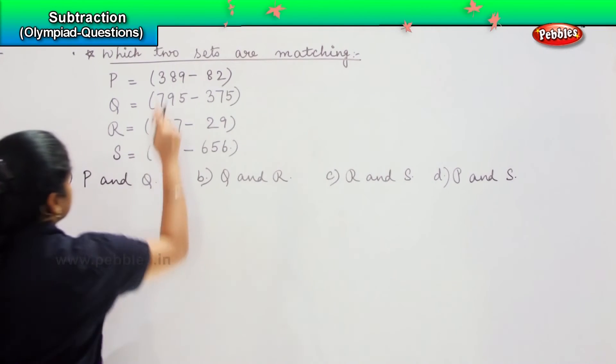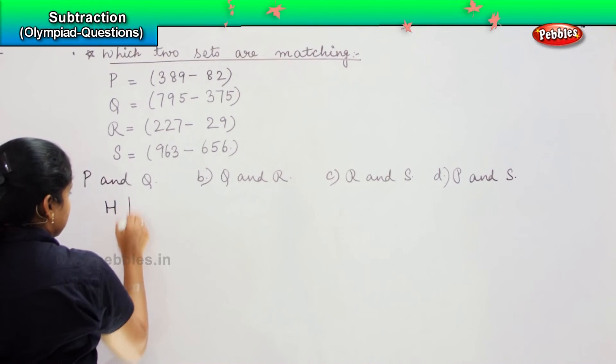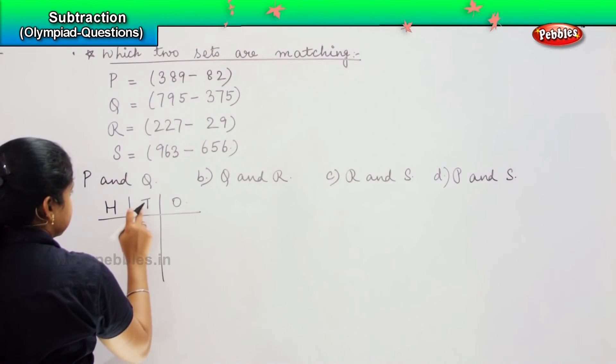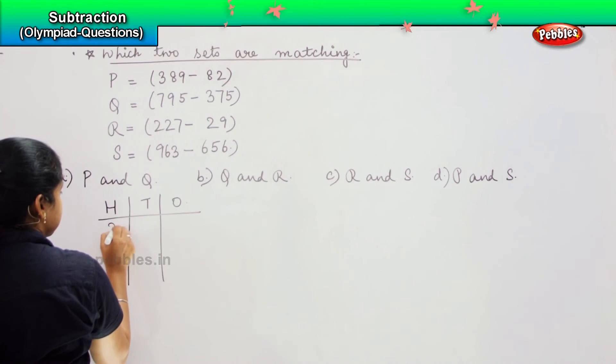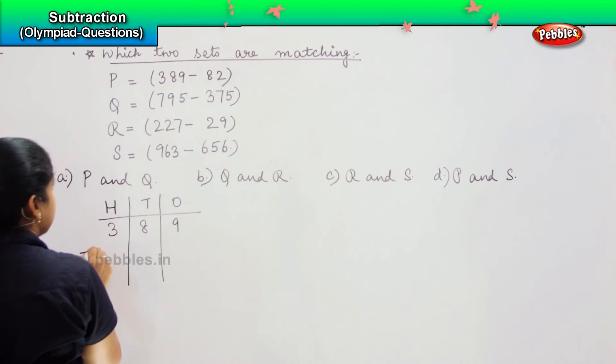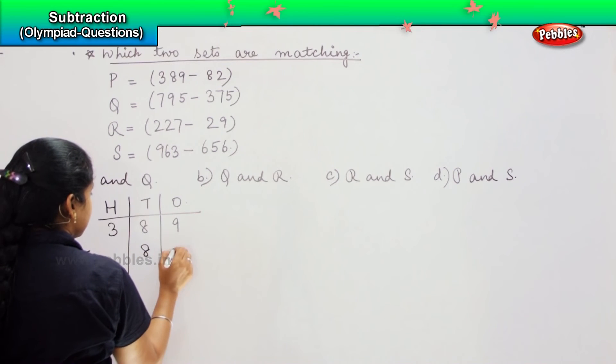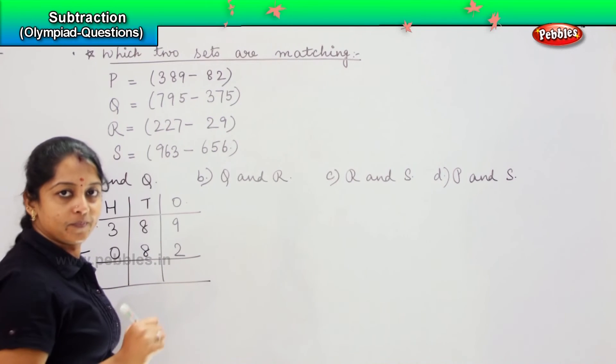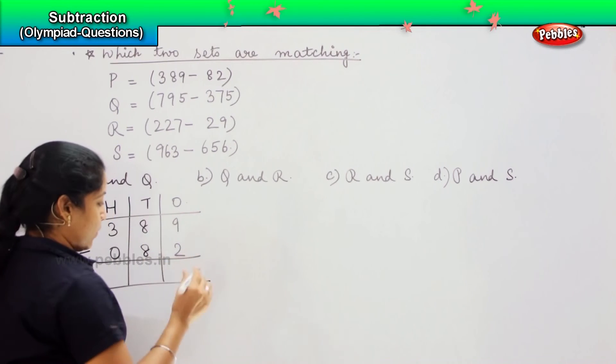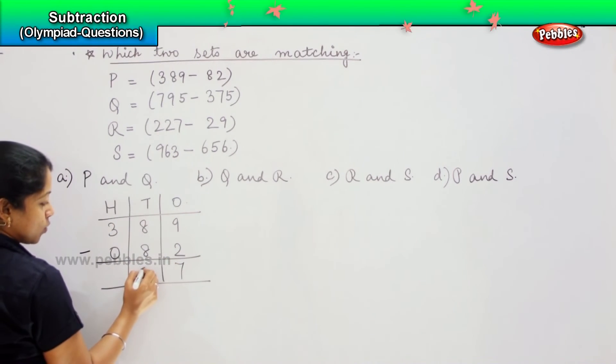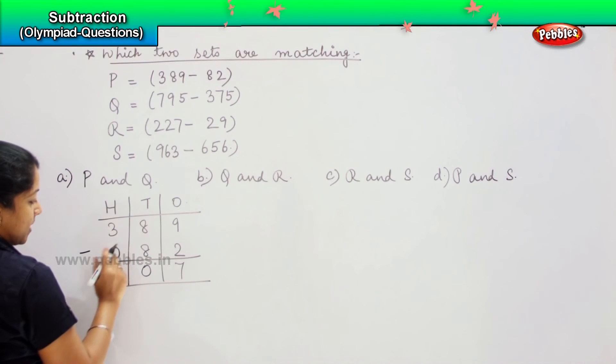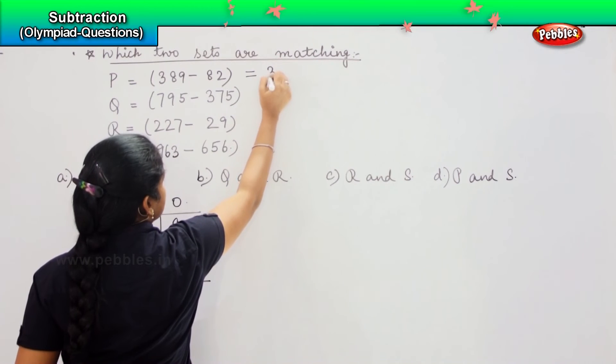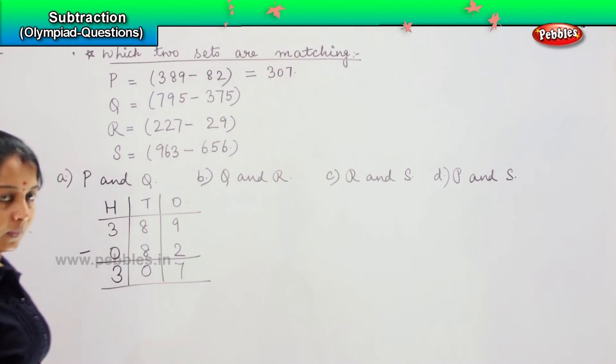What are we going to do? We need to individually solve each and then find out the matching pair. Starting with P here, since it is 3 children, so it will be H, T, O, which is nothing but hundreds, tens and ones. First one says 389 minus 82, which means we will put a 0 for H. So 9 minus 2 is 7, 8 minus 8 is 0, and 3 minus 0 is 3. So which means my answer for P is 307.